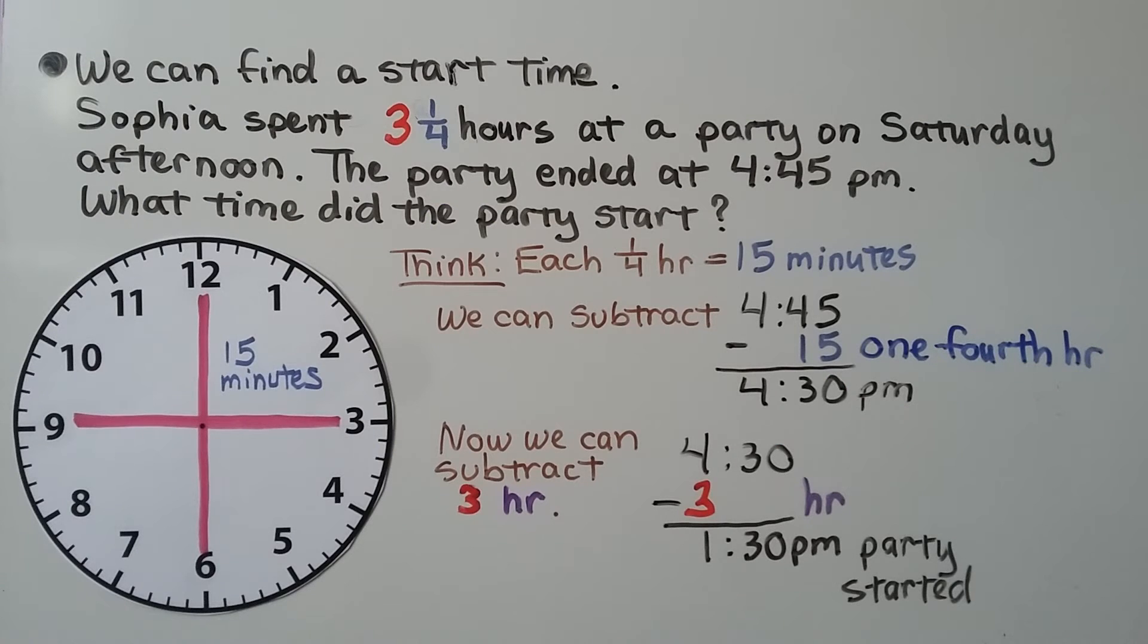We can find a start time. Sophia spent three and one-fourth hours at a party on Saturday afternoon, and the party ended at 4:45 PM. What time did the party start?